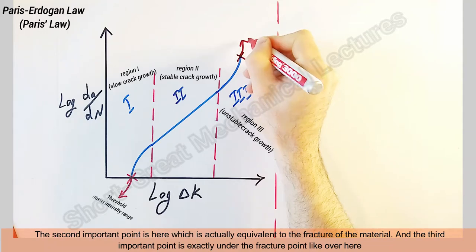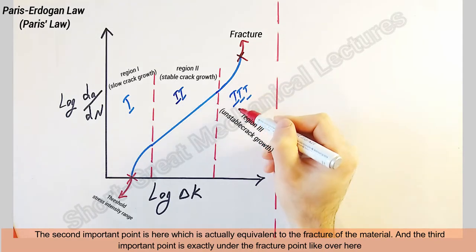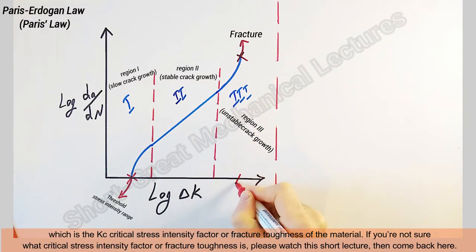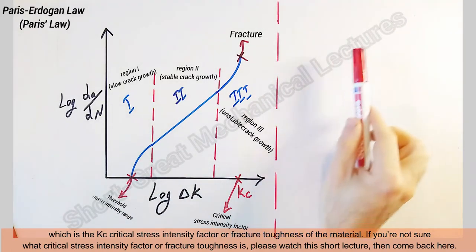The second important point is here, which is actually equivalent to the fracture of the material. And the third important point is exactly under the fracture point, which is the Kc, the critical stress intensity factor or fracture toughness of the material. If you're not sure what critical stress intensity factor or fracture toughness is, please watch this short lecture and then come back here.